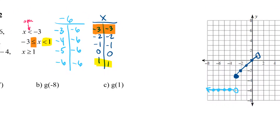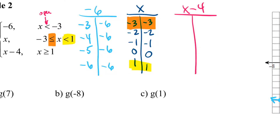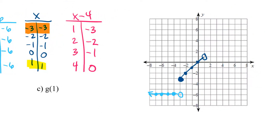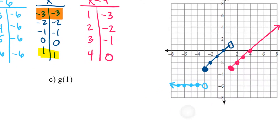Our third and last piece is x minus four, and I want all x values greater than or equal to one. Since it's greater than or equal to, that starting point gets a solid dot. Starting at one, I pick values two, three, four, and so on. Plugging in: one minus four gives negative three, two minus four gives negative two, three minus four gives negative one, four minus four gives zero. You can see it's a line with a slope of one, so we draw that line with an arrow on the end since it continues forever.